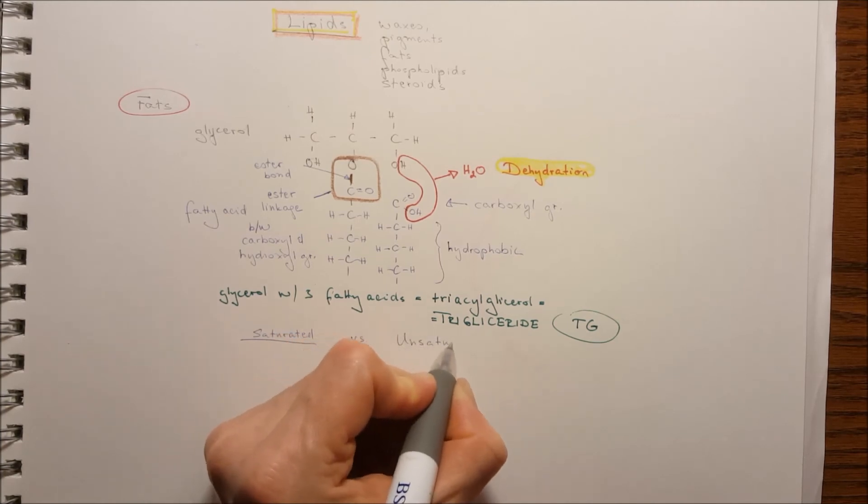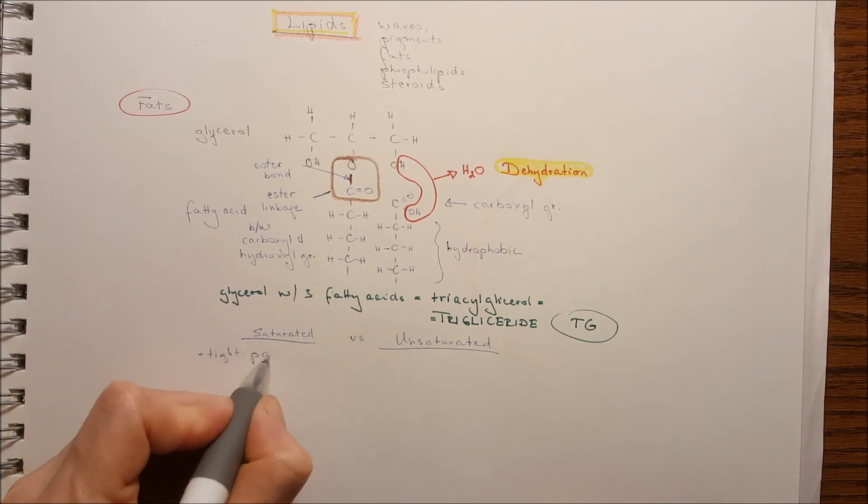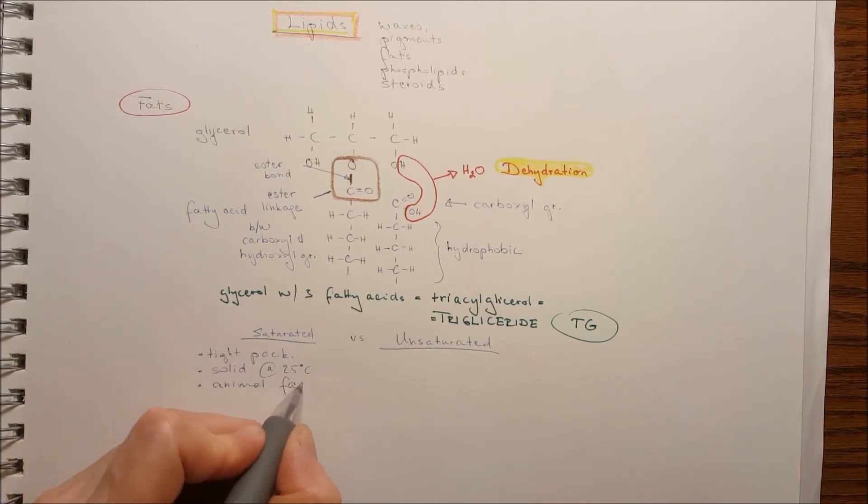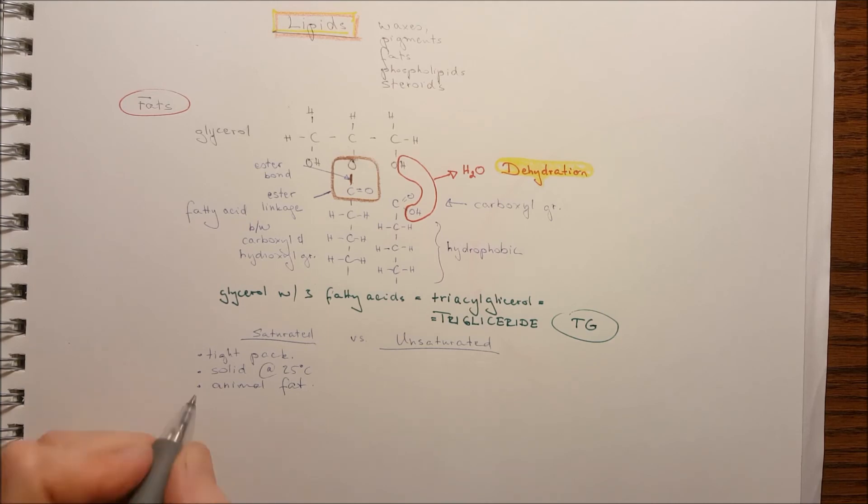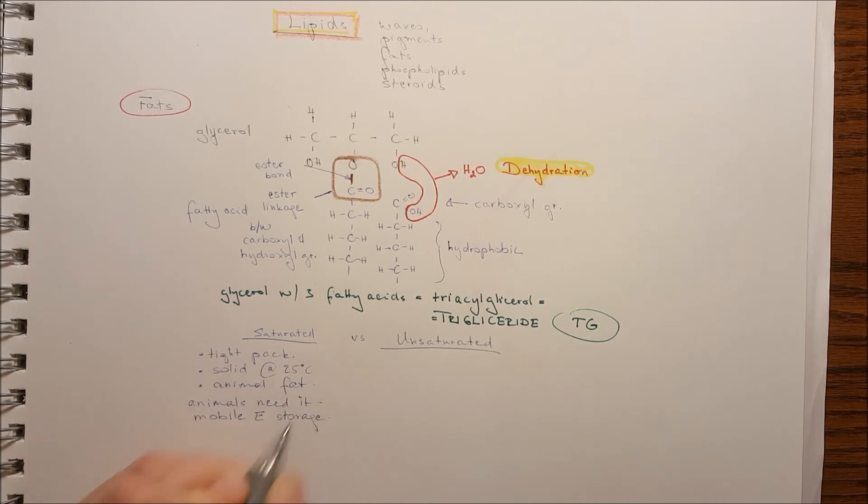So the fatty acid can be saturated versus unsaturated. Saturated, that means it doesn't contain any double bonds. The carbon chain is tightly packed and full with hydrogen atoms, solid at room temperature. They are the animal fats. An animal needs it because this is a mobile energy storage with tons of energy.